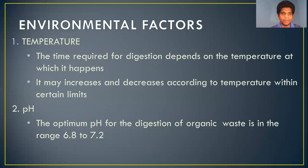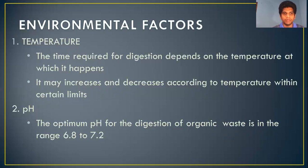Now let's move on to the environmental factors. The first factor is temperature. Time is a basic factor which affects the biogas plant, and that time is affected by the temperature. If it is in an optimal temperature range then the time taken for digestion will be less. The time required for digestion depends on the temperature at which it happens, and it may increase or decrease according to temperature within the limit.